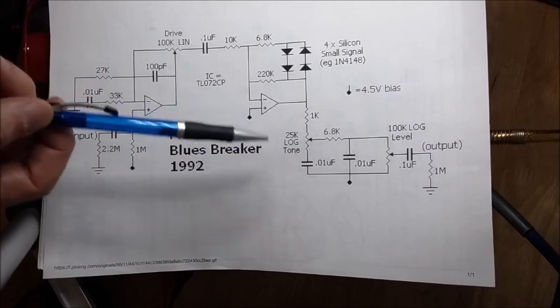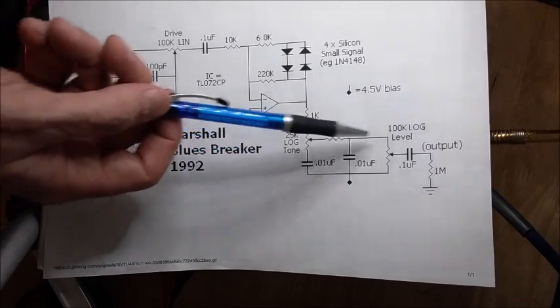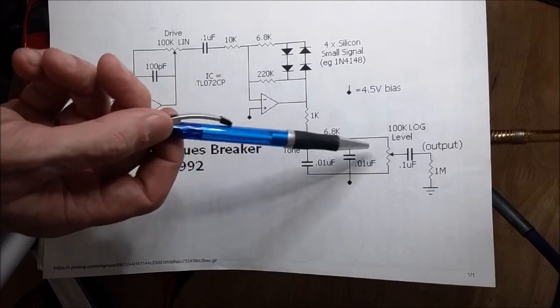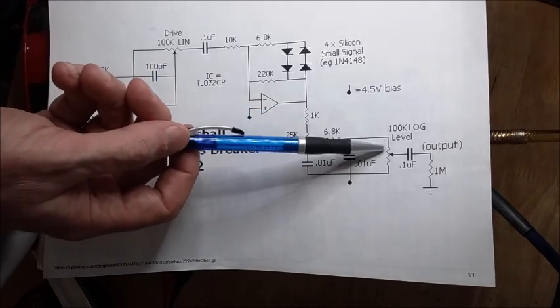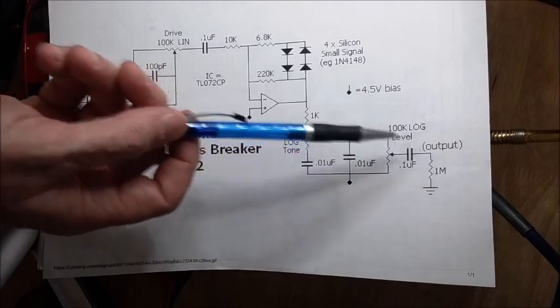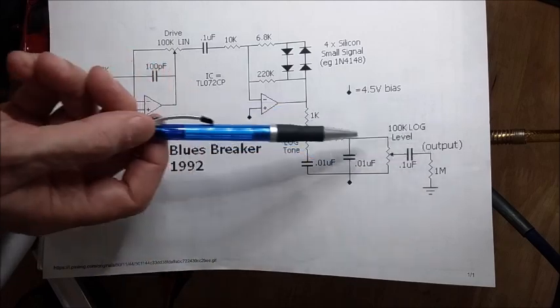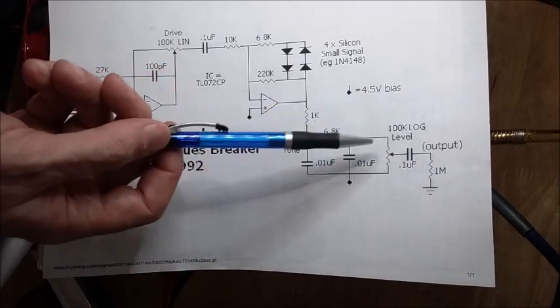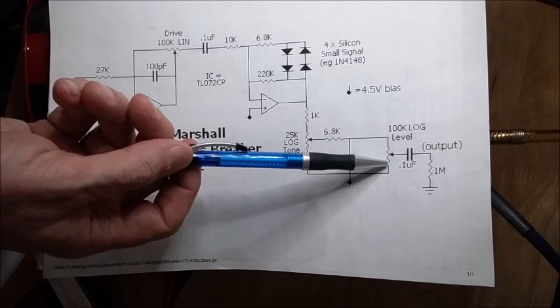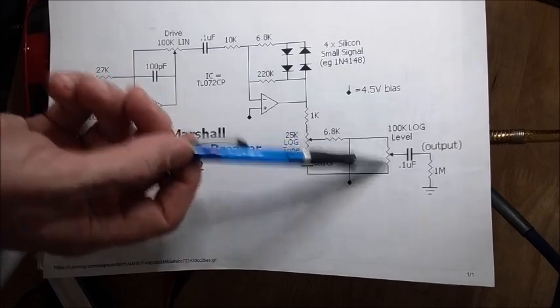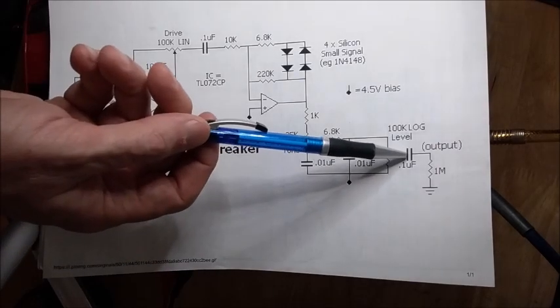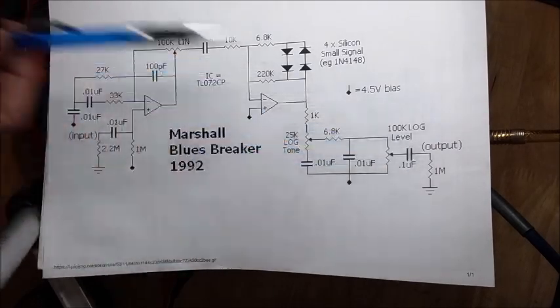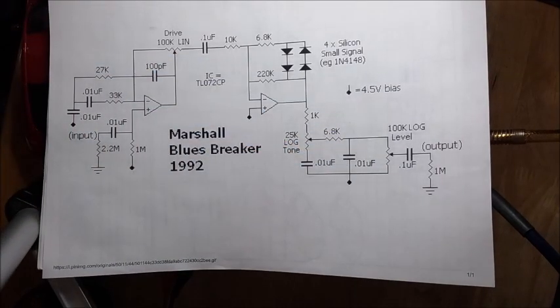From this we go right to the output and we have 100k ohm pot for volume. Again a wiper here, you'll get maximum output level out of the pedal if you come here. It's got to overcome that 100k ohm resistance and so your volume is going to be a lot lower. And of course you're blocking DC cap and a pull-down resistor to ground.